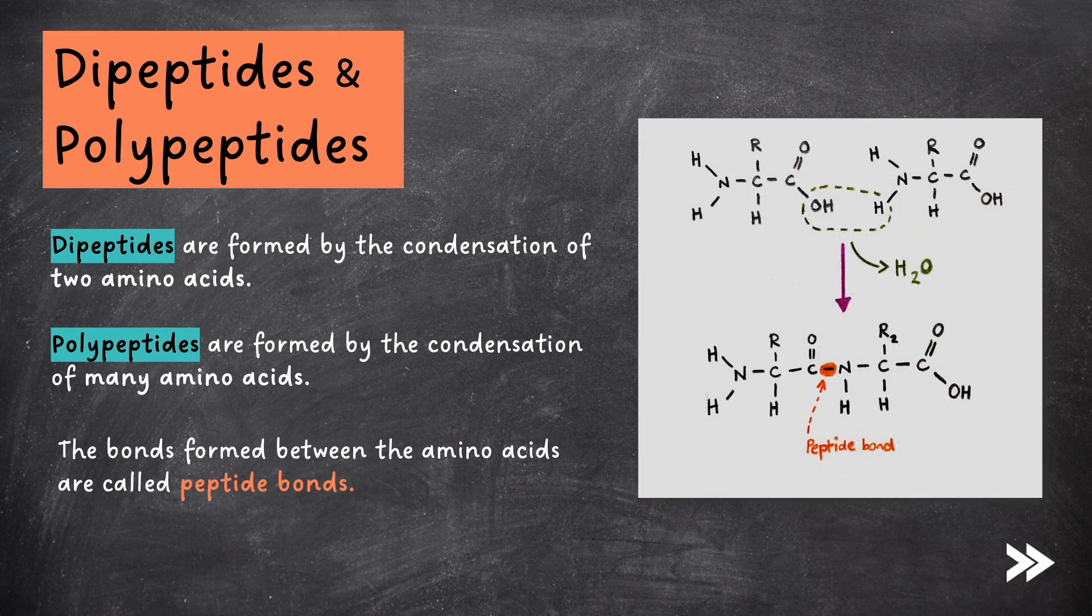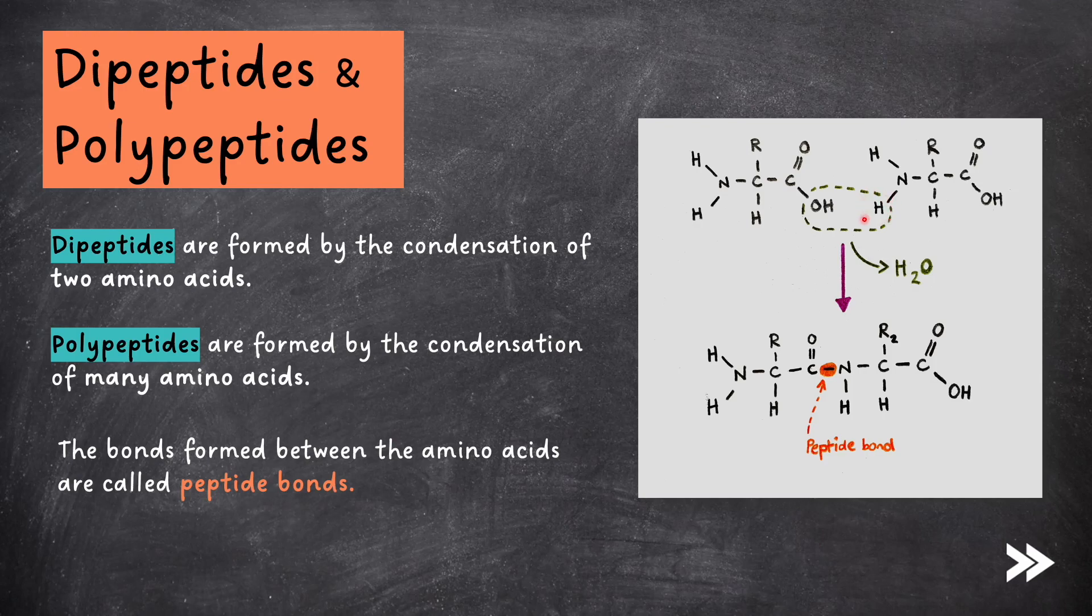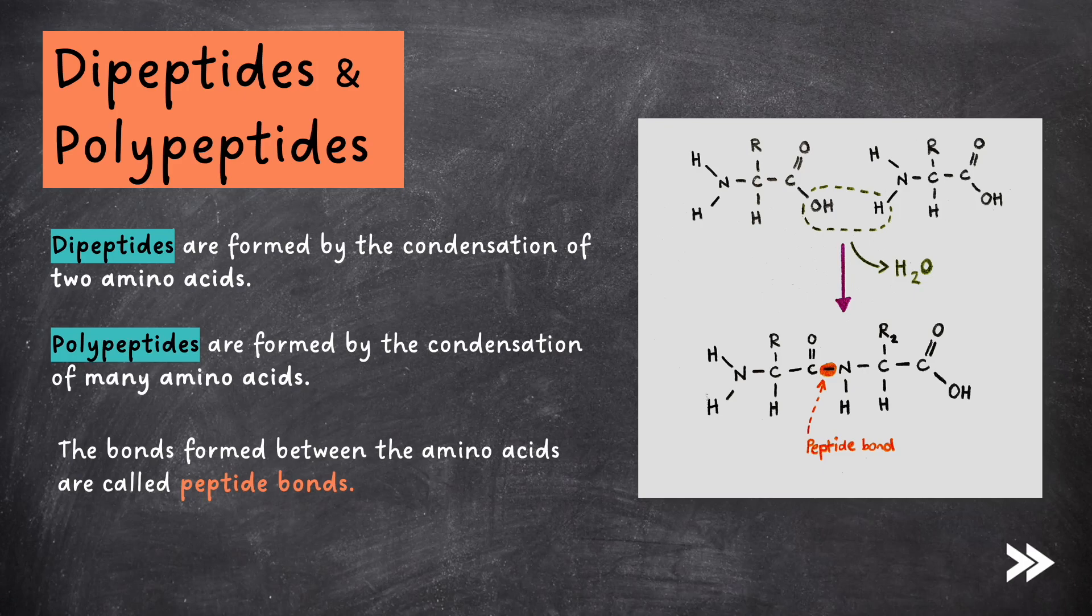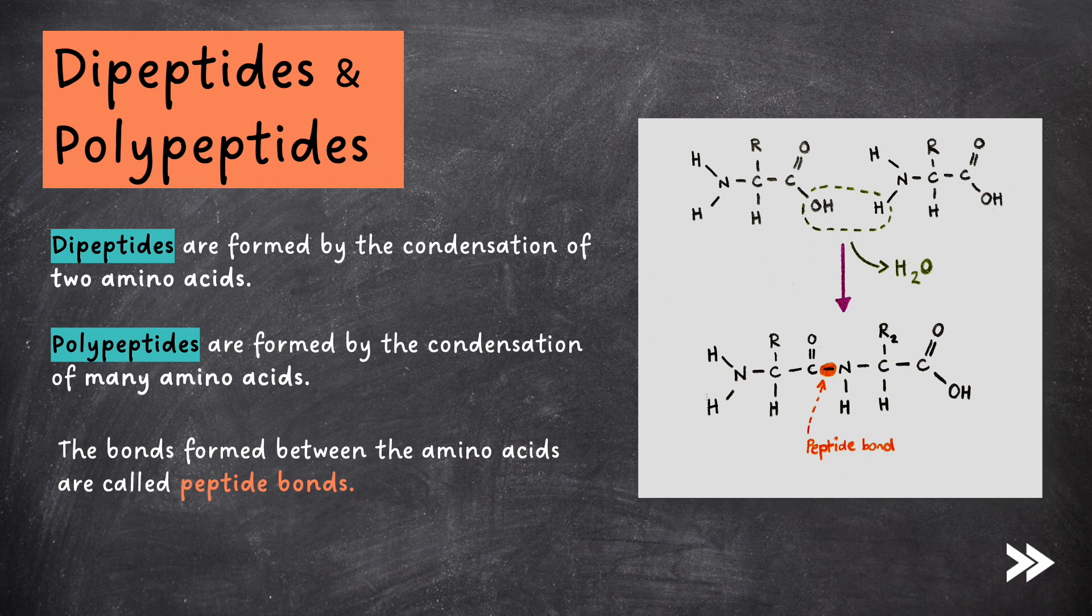The carboxyl group of one amino acid loses an OH. The amine group of the other amino acid loses a hydrogen atom. These combine to form water, which is why it's called a condensation reaction, and the amino acids join to form a peptide bond, which consists of C-O-N-H.